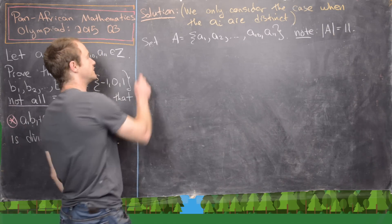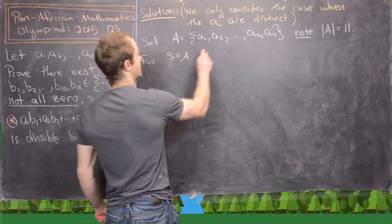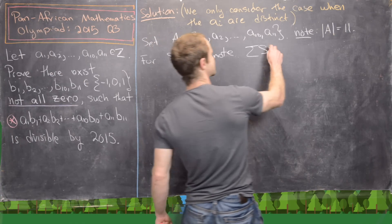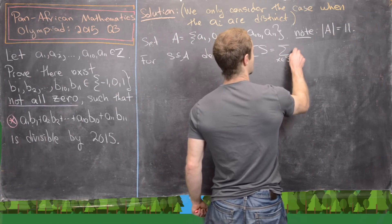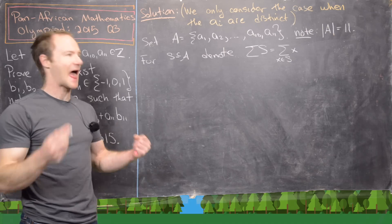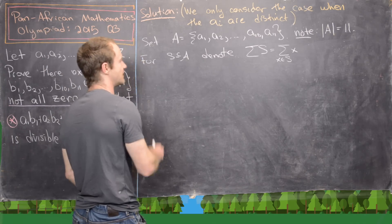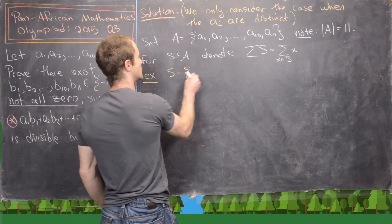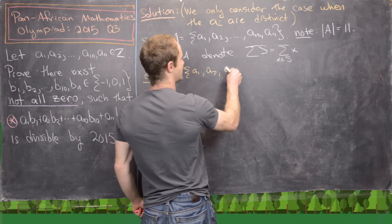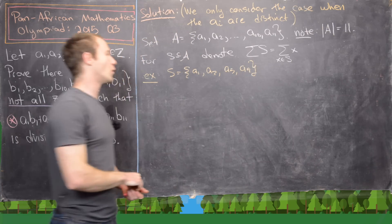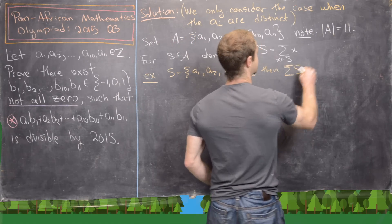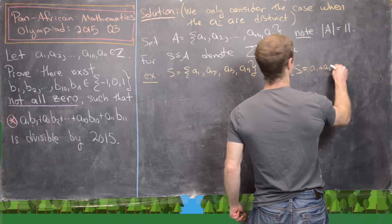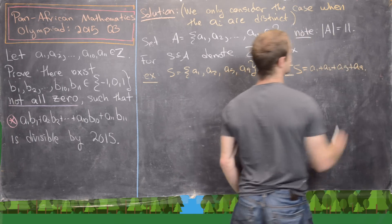Next, we'll introduce a little notation. For a subset S of A, we denote the sum σ(S) as the sum over all x in S of x — in other words, the element sum of the subset S. For example, if S equals {A1, A2, A5, A9}, that is a four-element subset, then σ(S) equals A1 + A2 + A5 + A9.